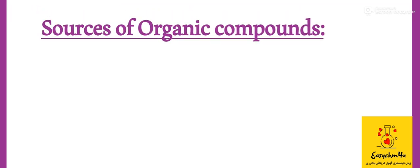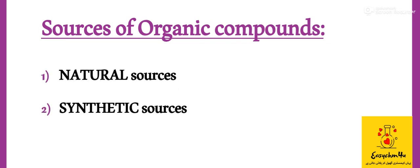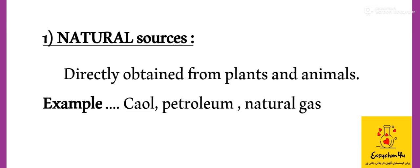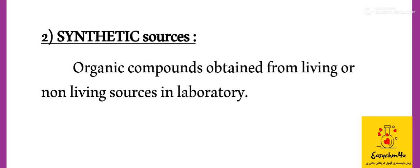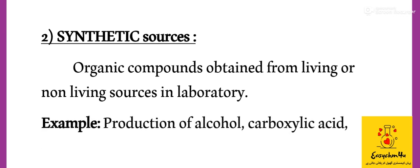The sources of organic compounds can be natural or synthetic. Natural sources are when organic compounds are directly obtained from plants and animals: coal, petroleum, natural gas, carbohydrates, and proteins. Synthetic sources are when organic compounds are obtained from living or non-living sources in the laboratory: production of alcohol, carboxylic acids, aldehydes, etc. Synthetic organic compounds can be prepared in two ways.